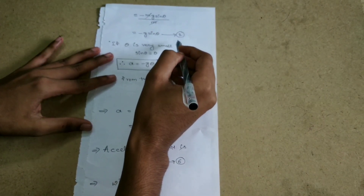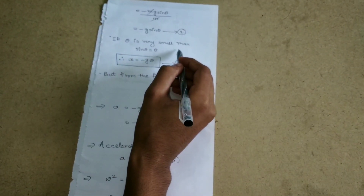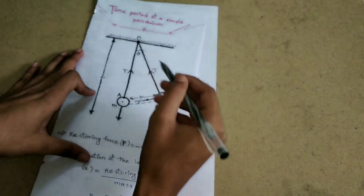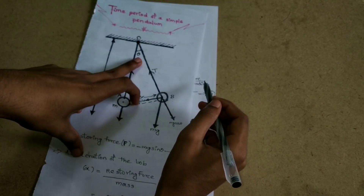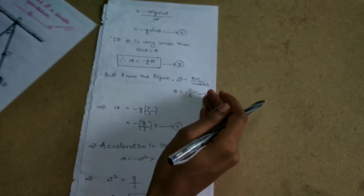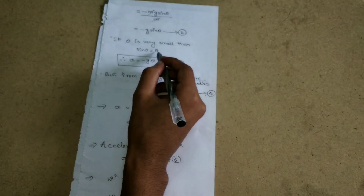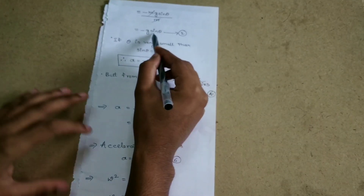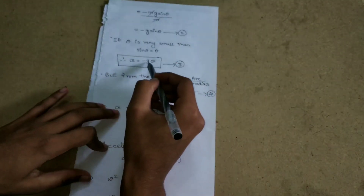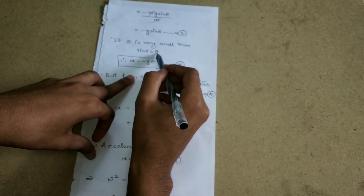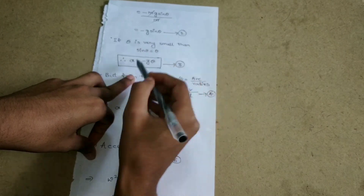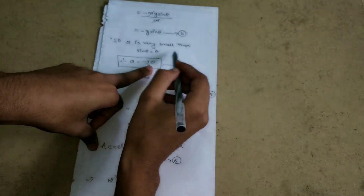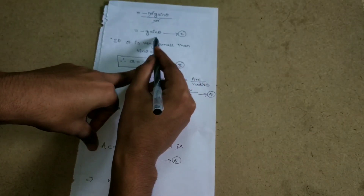If theta is very small, then sin theta is approximately equal to theta. So sin theta equals theta.